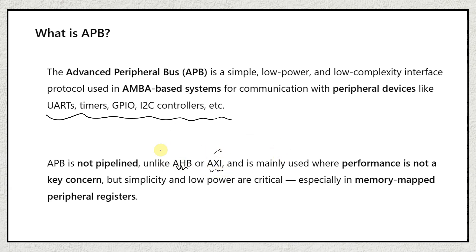APB is not pipelined like AHB or AXI. We will discuss AXI protocol in the next series. When we discussed AHB protocol, we saw that AHB supports pipelined structure — what pipeline structure means, how it is achieved, and what burst transfers are. APB is not pipelined unlike AHB or AXI, and is mainly used where performance is not a key concern but simplicity and low power are critical, especially for memory-mapped peripheral registers like UART, timers, and GPIOs.